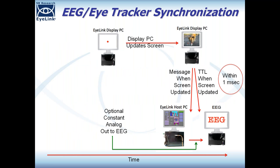Here's a diagram of what happens in an EEG experiment. The display PC runs your Experiment Builder project and presents trial information. When it does, it sends a message to the host PC and simultaneously sends a TTL pulse to the EEG device. Critically, this happens well within one millisecond, so you have basically simultaneous markers in the two data sets.